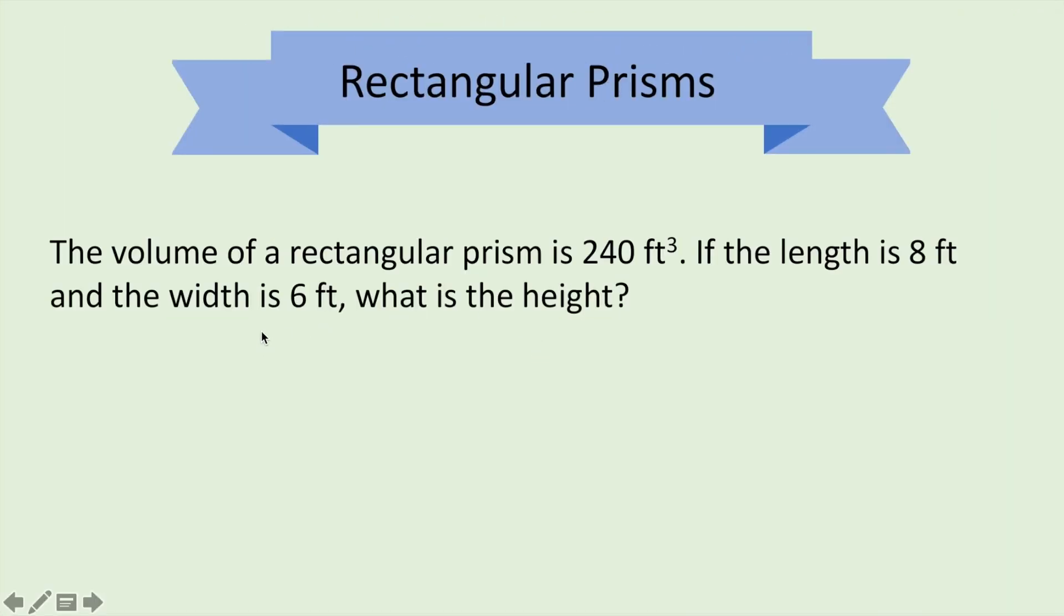Next problem. How about if they give us a little bit different information? So we've got to have the rectangular prism. We're going to pull our formula right off our formula sheet. Volume equals length times width times height. Plug the numbers in in the right spot. 240.